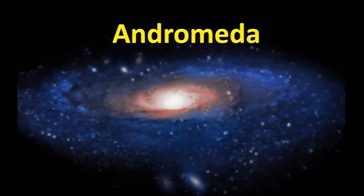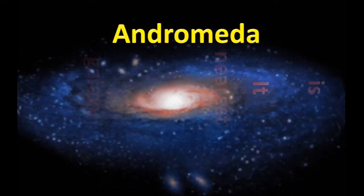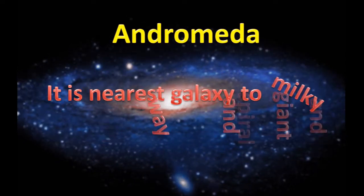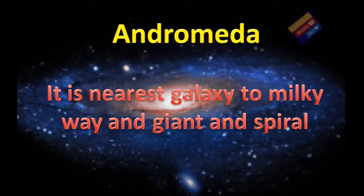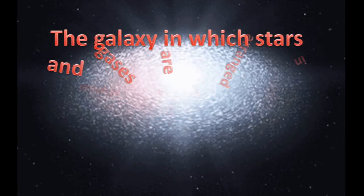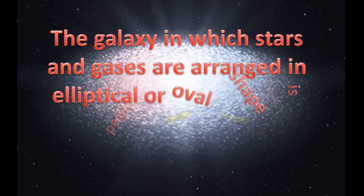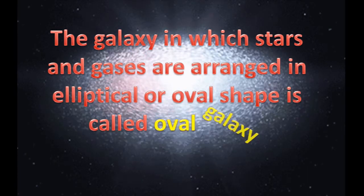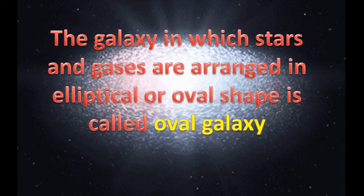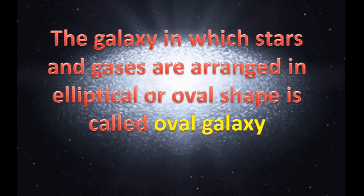Andromeda. It is the nearest galaxy to Milky Way and giant and spiral. The galaxy in which stars and gases are arranged in elliptical or oval shape is called oval galaxy or elliptical galaxy.